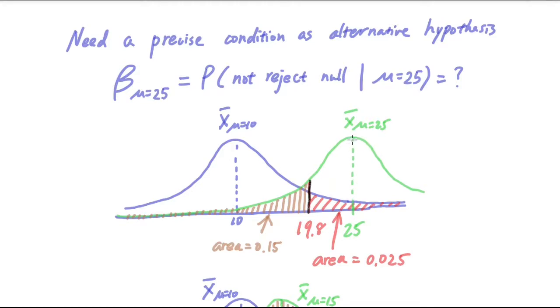So you can see that it's centered around 25. The question being asked to evaluate beta is if the null hypothesis is false, i.e. if the alternative hypothesis is true, what is the probability of not rejecting? So the region of acceptance is basically when the value is smaller than 19.8. So all the region on the left side.